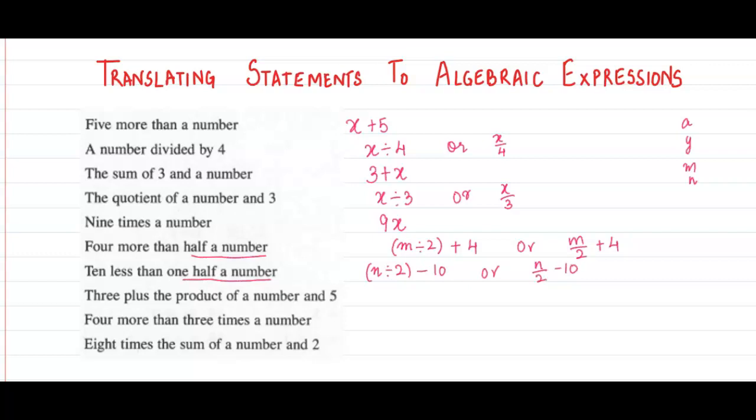3 plus the product of a number and 5. Product of a number and 5, product means multiplication. Product of a number and 5 means 5x. In algebra we do not put the multiplication sign. So 3 plus the product of a number and 5 means we have to add 3.